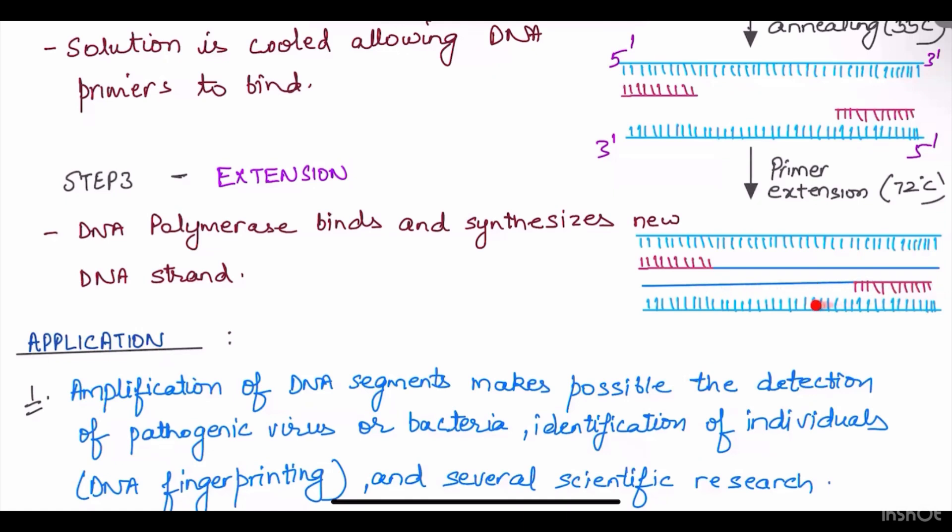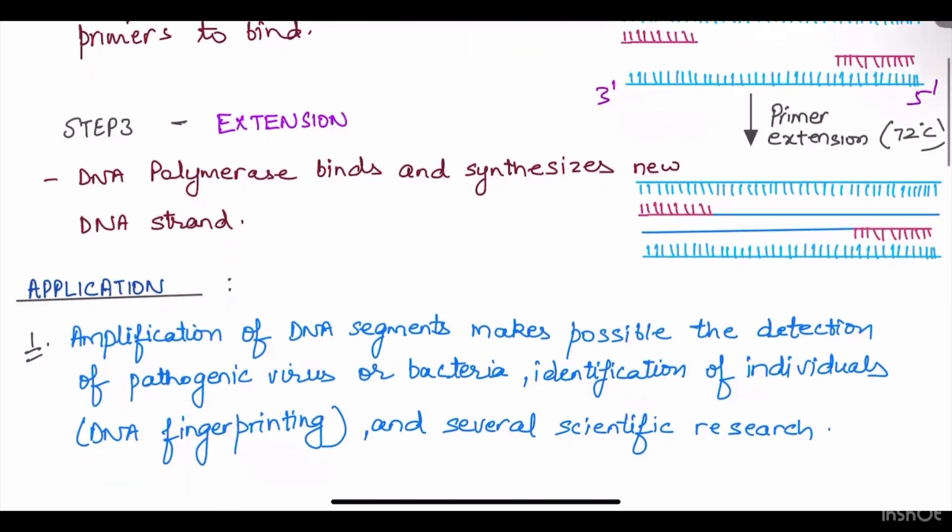As a result, a double-stranded DNA molecule is obtained. These three steps are repeated 20 to 40 times in order to obtain a number of sequences of DNA of our interest.